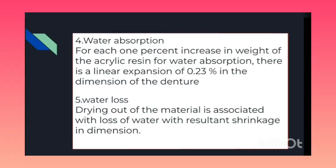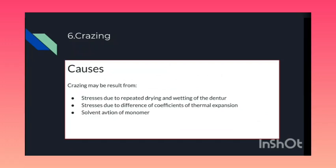Number five is water loss: drying out of the material is associated with loss of water with resultant shrinkage in dimension. Number six is crazing — the appearance of cracks on the surface of the acrylic resin. Crazing may result from: mechanical stresses due to repeated drying and wetting of the denture causing alternate contraction and expansion; stress due to difference in coefficient of thermal expansion between porcelain teeth or other inserts like clasps and the acrylic denture base; and solvent absorption of monomer during repair of denture when some monomer comes in contact with the resin.